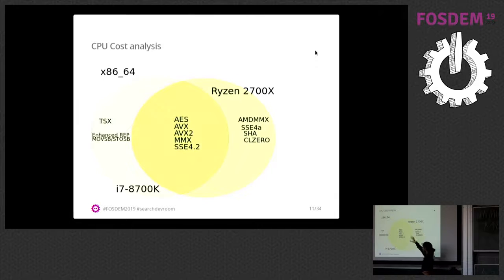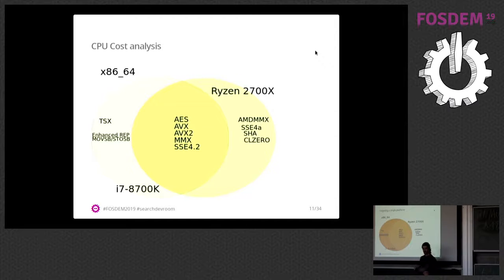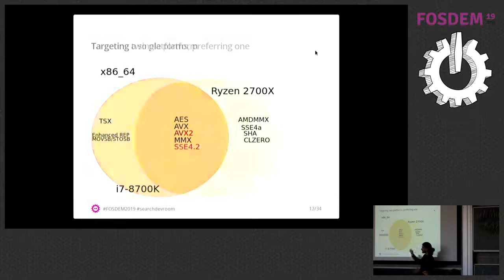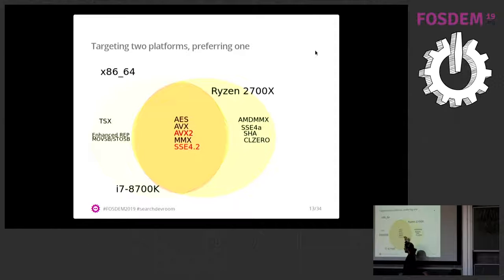Graphically, if we have the x86-64 architecture with two processors as examples, they share a common core instruction set but also have different instructions. If we set mArch specifically for an Intel processor, we can use instructions that are extensions to x86-64 running on that processor. Even without that, mTune for a specific processor can select better-aligned instructions that perform better than alternatives. In some way, GCC is doing cost analysis and optimization for us as a compiler.